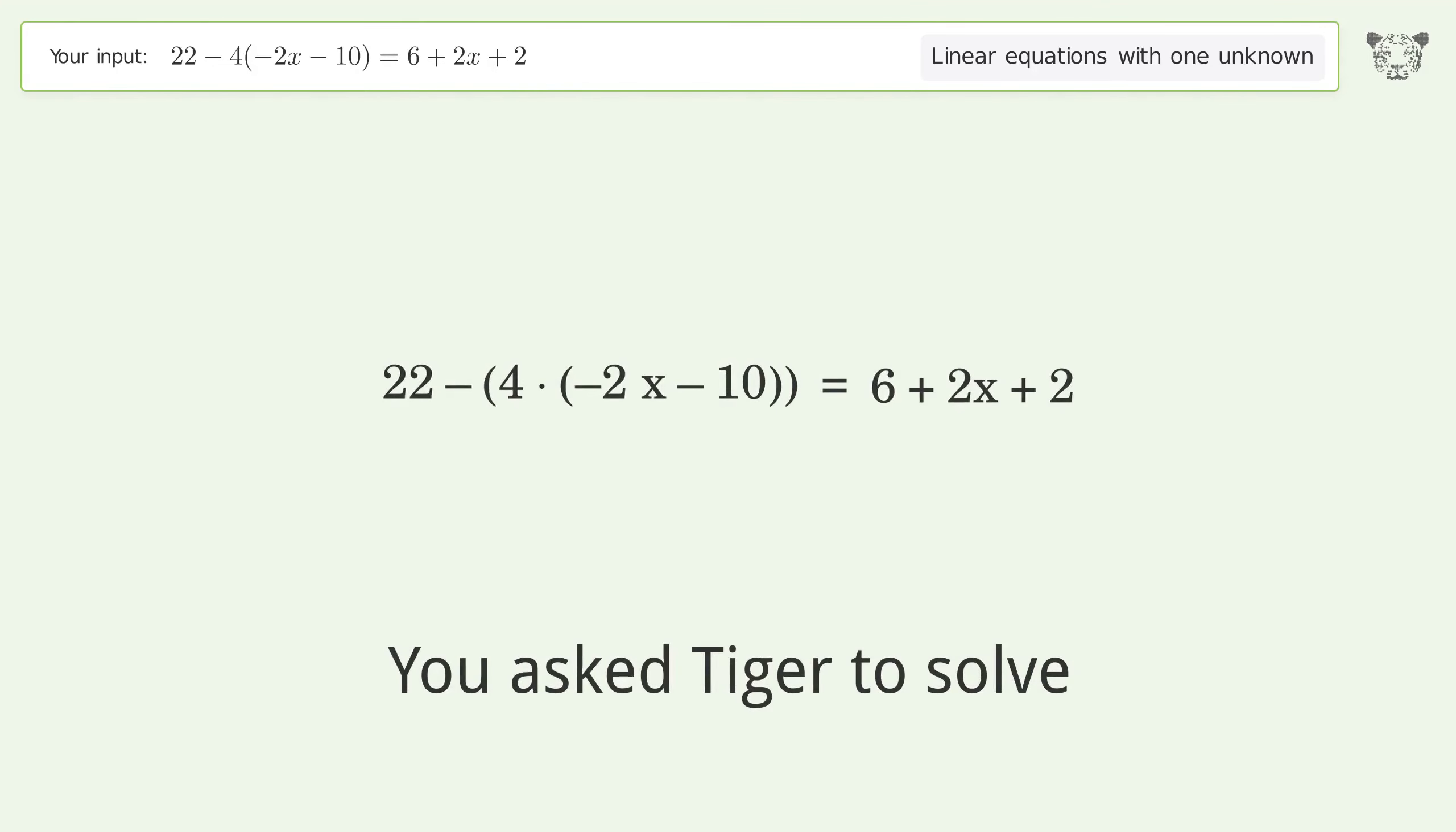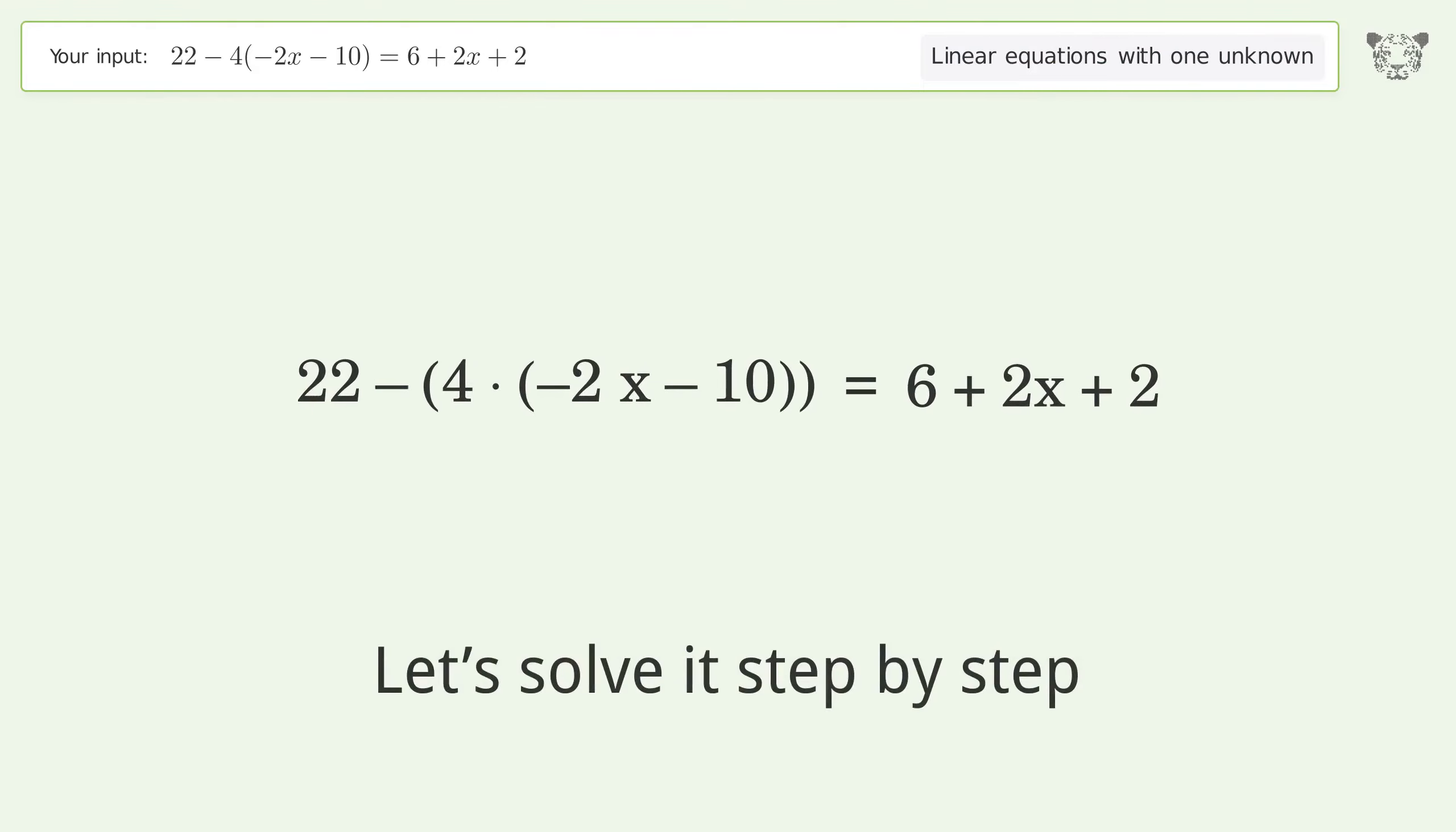You asked Tiger to solve this. This deals with linear equations with one unknown. The final result is x equals negative 9. Let's solve it step by step. Simplify the expression.